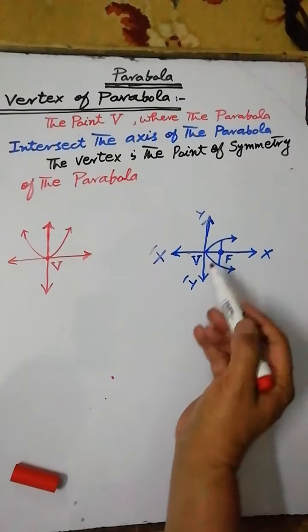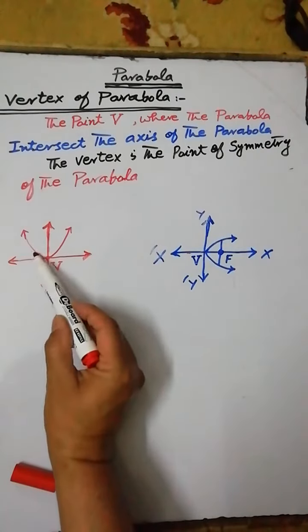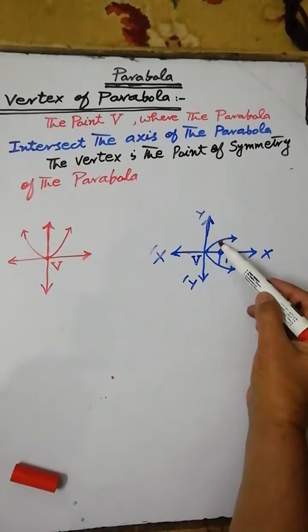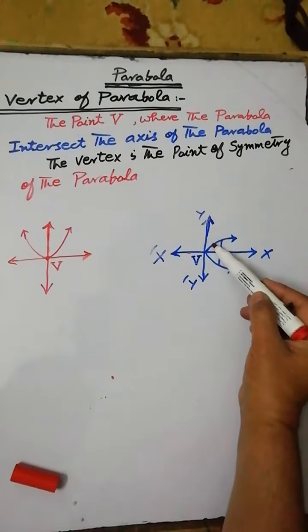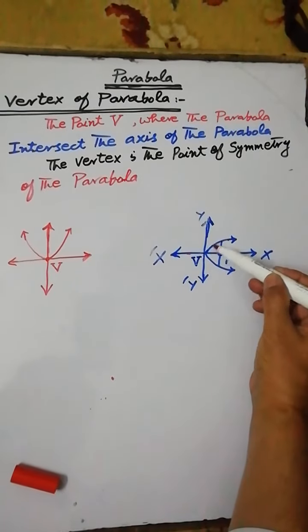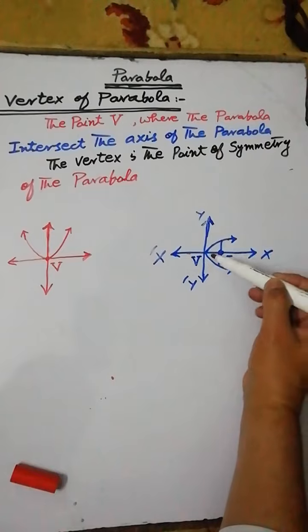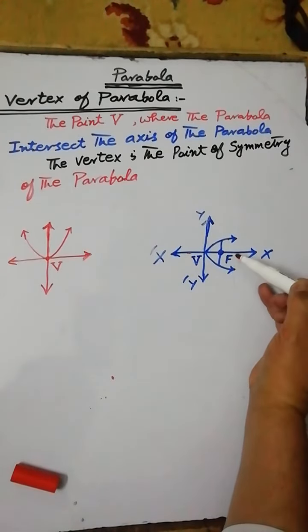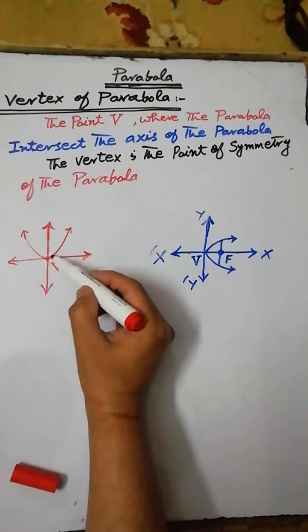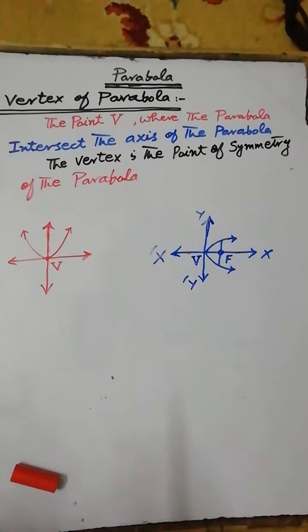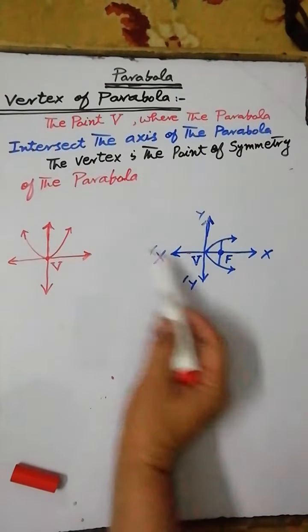The vertex of the parabola is also called the point of symmetry. Every point of the parabola above the axis of the parabola is symmetric to a corresponding point below the axis. Therefore, this point is also called the point of symmetry of the parabola.